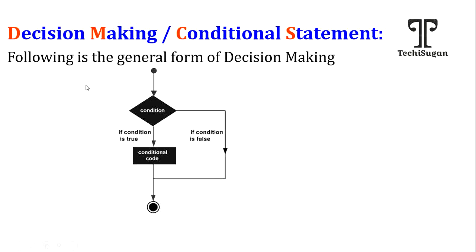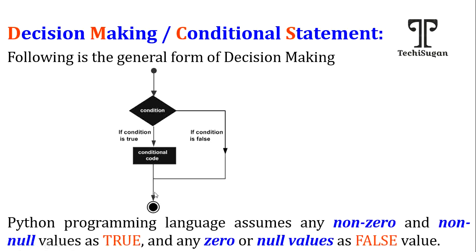If my condition is true, a certain set of code will be displayed and it will terminate. If my condition is false, another set of code will be executed and terminated. Whenever you apply a condition, the true and false values may depend on integer values as well — apart from 0 and null, all other values are considered true. Zero and null are considered false.